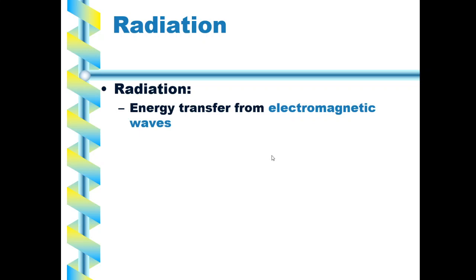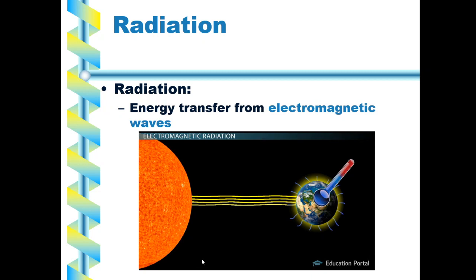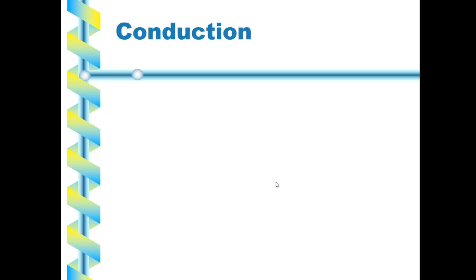One is radiation. Radiation, as you did in your reading, is transferred from EM waves, electromagnetic waves, which we talked about before. The most common one for radiation is from the sun to the earth. Earth transfers its energy in heat and energy through what we call radiation.